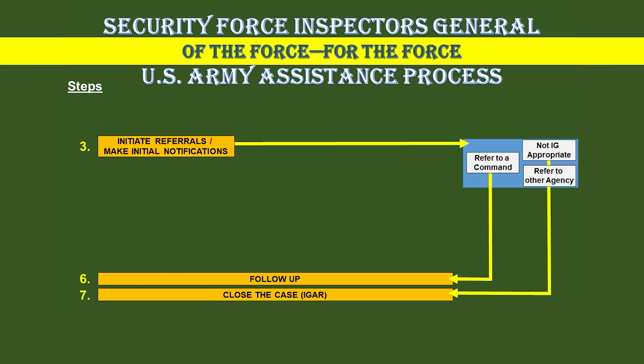IGs do not evaluate how leaders evaluate their subordinates. In this case, we would give the soldier the information regarding the redress process for evaluations, then go straight to Step 7 and close the case. If a soldier's complaint highlights potential criminal activity, we refer that to an organization with the proper authorities. Complaints that include sexual harassment or racism are referred to our Army Sexual Harassment and Assault Response Program, or SHARP, Equal Opportunity, Family Advocacy, or Equal Employment Opportunity Programs.